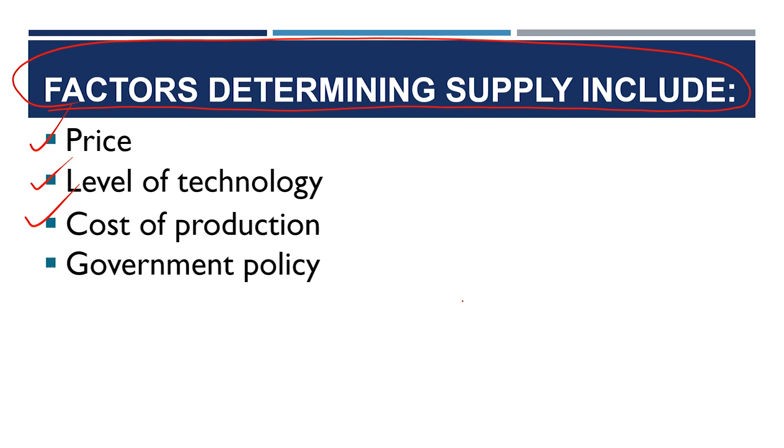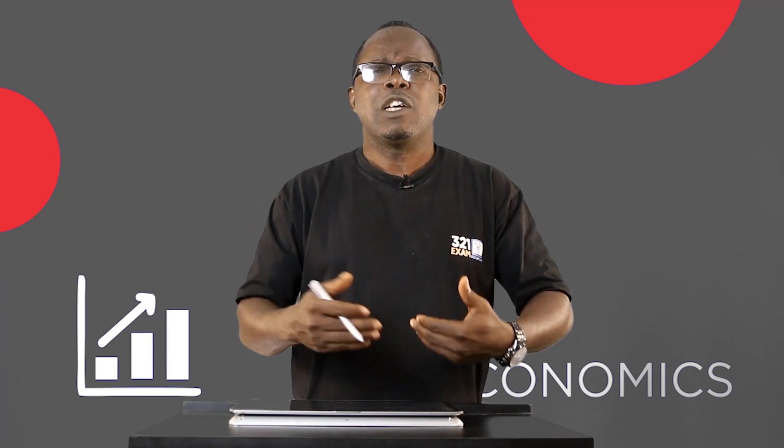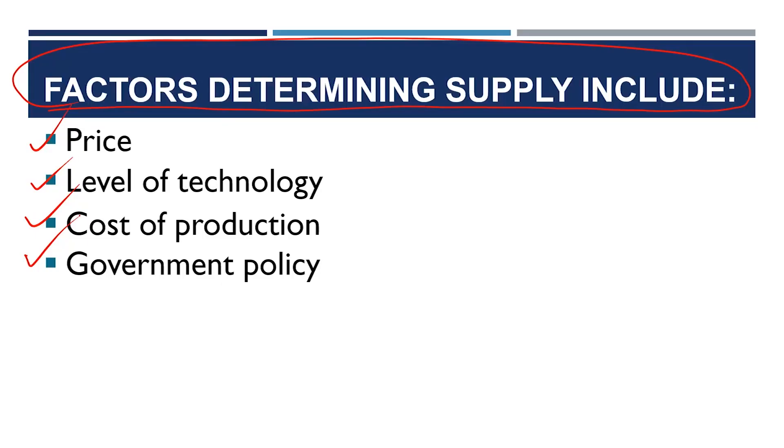Then government policy. Government has brought up a lot of policies. When we look at economic growth and development, we talk about the National Economic Growth and Development Strategy. When government policy supports the establishment of industry — by reducing subsidies and encouraging local industry to thrive — the supply of goods and services will also increase. So government policy is very important.